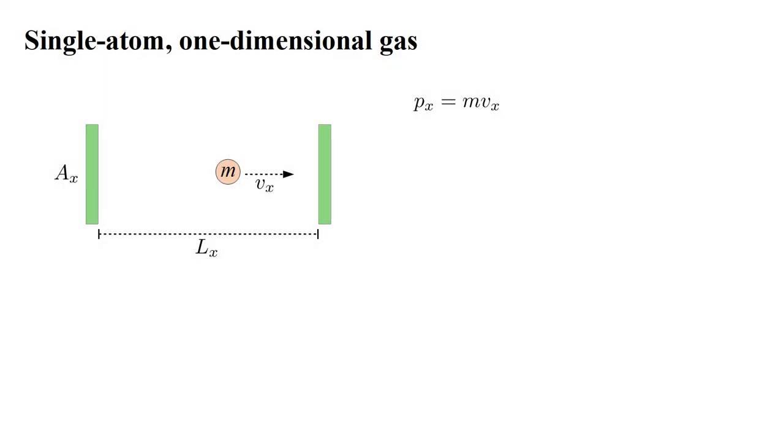The atom's momentum is M Vx. When it bounces off a wall, its momentum goes from plus this amount to minus this amount, or vice versa. Therefore, the total change in momentum, call it delta Px, is 2 M Vx.